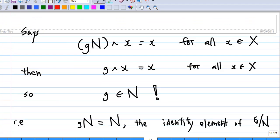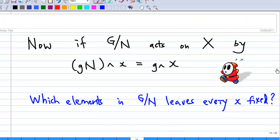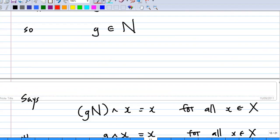So, for example, the above group action, G by N acts on X given by the left coset gN acts on x equals g^x here. This is a faithful group action as we have seen a calculation just now.